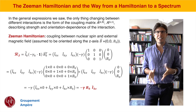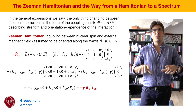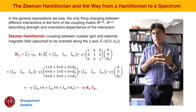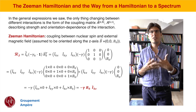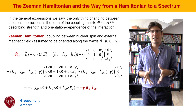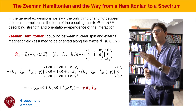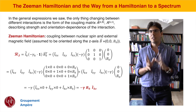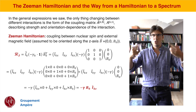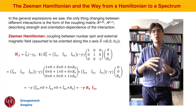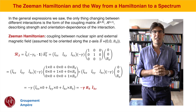The only thing that changes between the different interactions when using these formulas is the value of the coupling matrix A. In the case of the Zeeman Hamiltonian, the coupling matrix is very simple — it's just minus the gyromagnetic ratio times the identity matrix, so it's basically a constant. We insert this value for our coupling matrix, writing minus gamma times the identity instead of A, and what comes out is exactly the expression for the Zeeman Hamiltonian that we know from basic NMR courses.